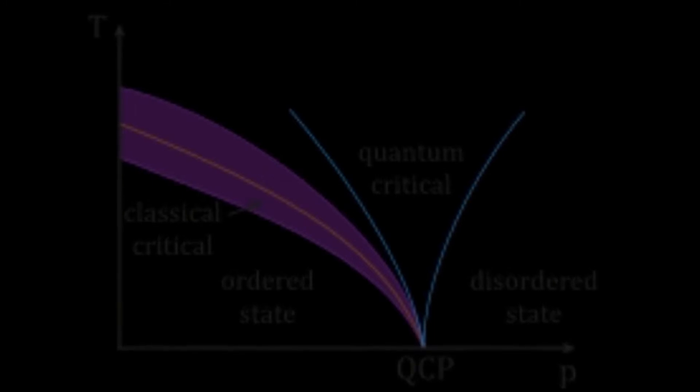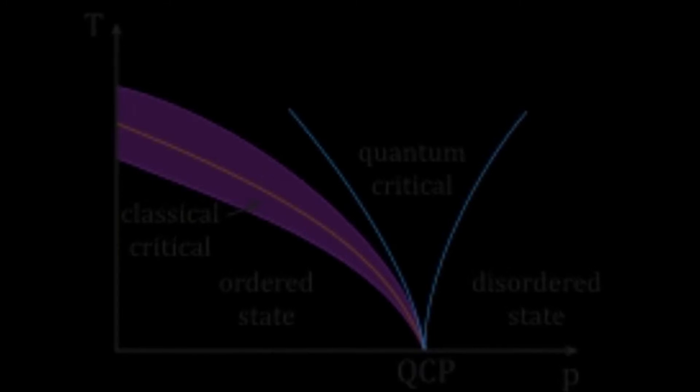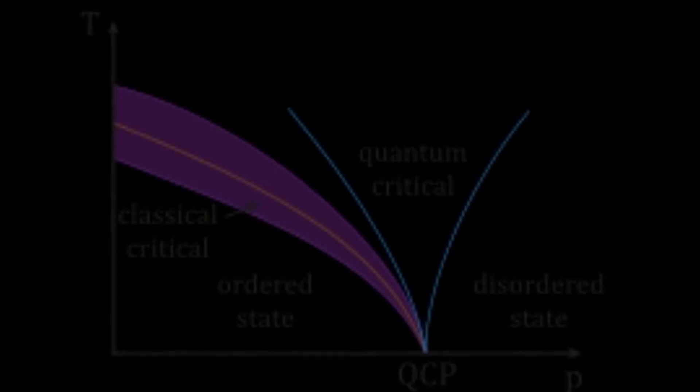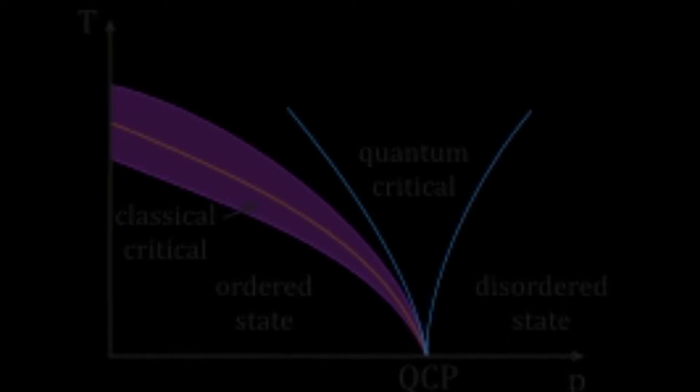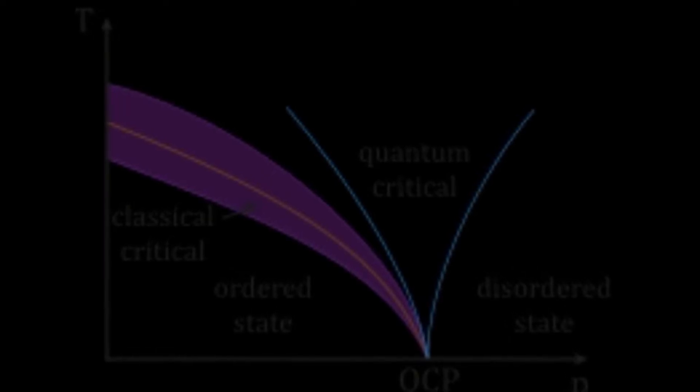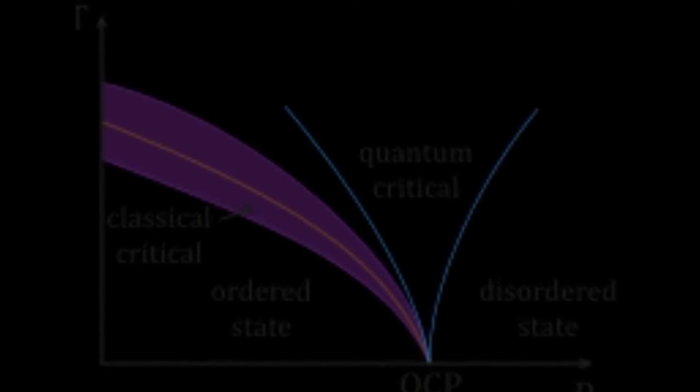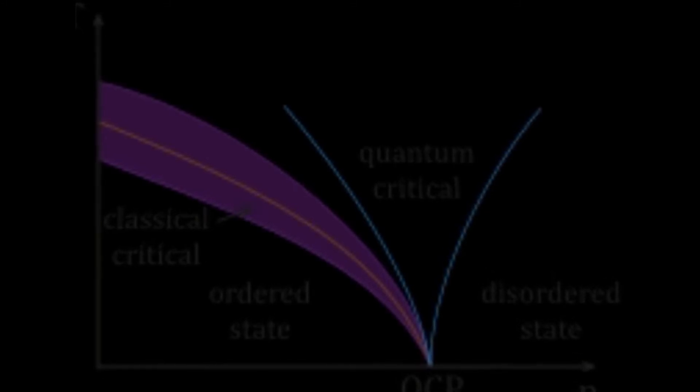Crystallography is the experimental science of determining the arrangement of atoms in crystalline solids. The word crystallography derives from the Greek words kristin cold drop, frozen drop, with its meaning extending to all solids with some degree of transparency, and graphine to write.